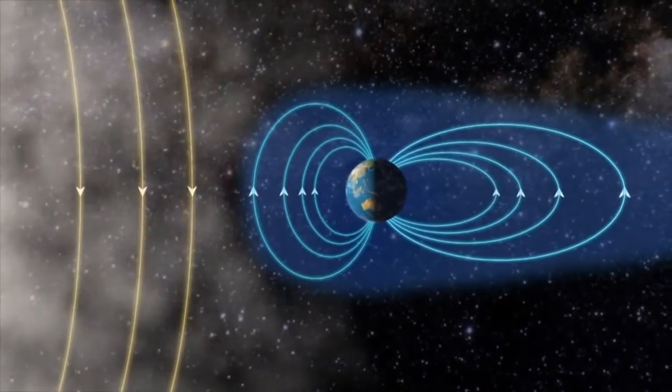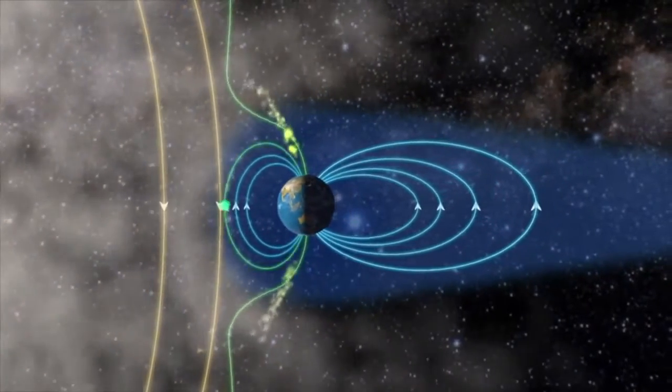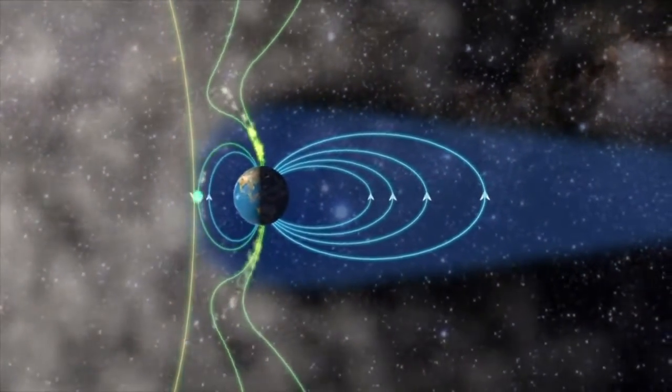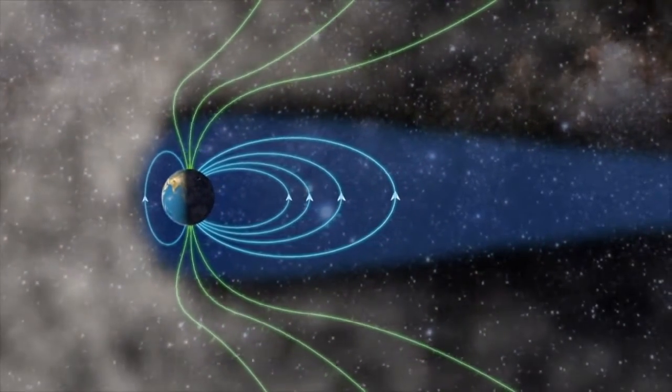The magnetic fields couple together and create a funnel for the gas streams down on the daylight side of the pole. This is the daylight aurora.